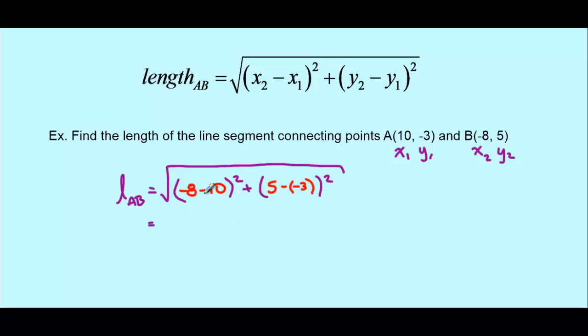Well, negative 8 subtract 10 is negative 18. So this is going to end up being the square root of negative 18 all squared plus 5 subtract negative 3. Subtracting a negative is adding. So 5 plus 3 is 8. So plus 8 squared.